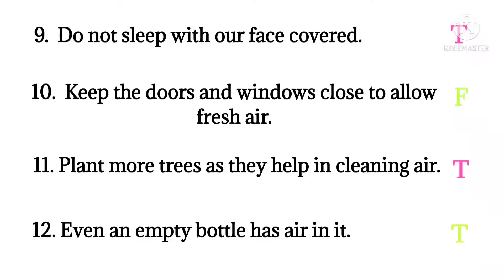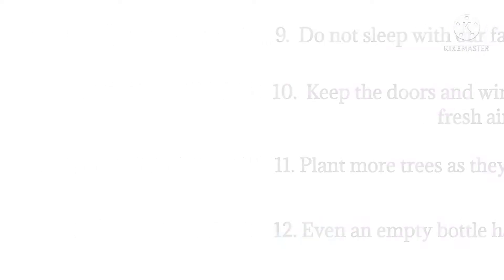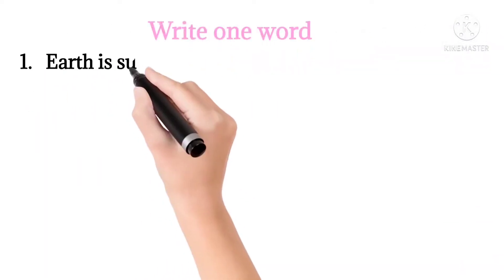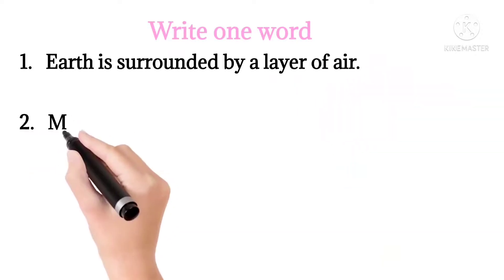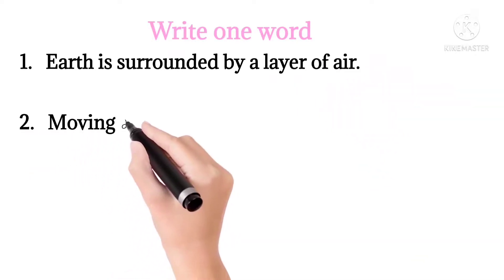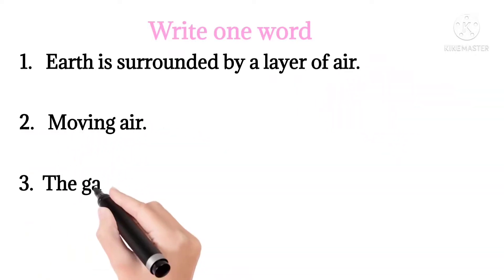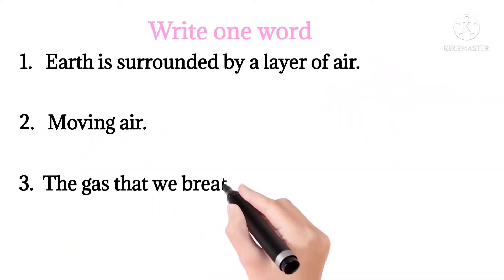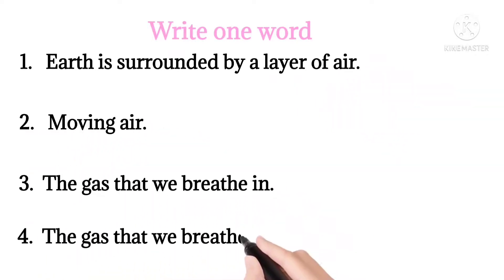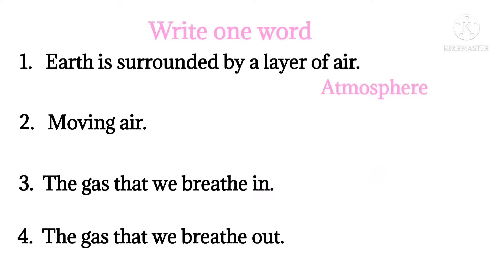Statement 14: Earth is surrounded by a layer of air — true. This layer is called the atmosphere. In the atmosphere, many gases are present. Moving air is called wind.